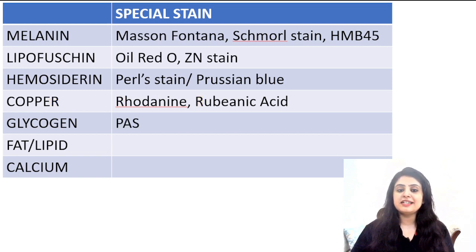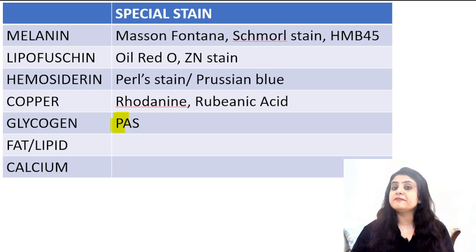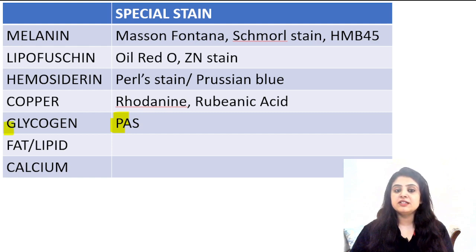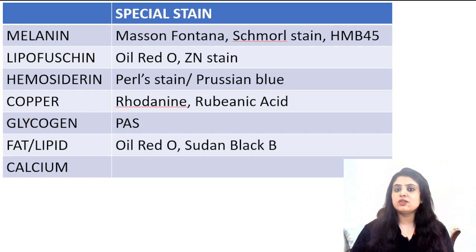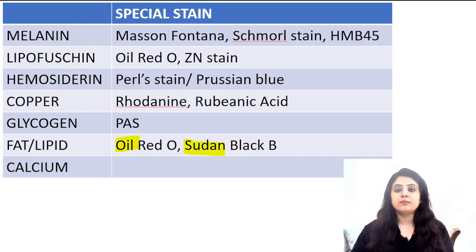Glycogen — a favourite with the girls. Why do I say that? Because it is stained by something called PAS. P for PAS, P for pink. What colour does this stain give? It gives a pink colour — so pink is a favourite with the girls, that is how we learn glycogen. For fat or lipid, there is something oily called Oil Red O, and another stain called Sudan black B — so ORO, SBB: Oil Red O and Sudan black B.